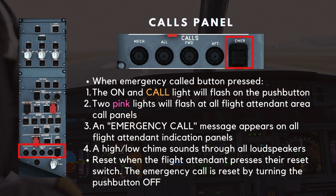The final button on the calls panel is the emergency call button. When this is pressed: 1. The on and call light will flash on the push button. 2. Two pink lights will flash at all flight attendant area call panels. 3. An emergency call message appears on all flight attendant indication panels. 4. A high-low chime sounds through all loudspeakers.